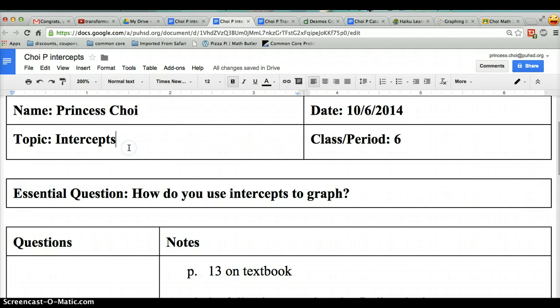Please make sure you have your name, Topic Intercepts. I want you to put the date for October 6, and then please put period 6.